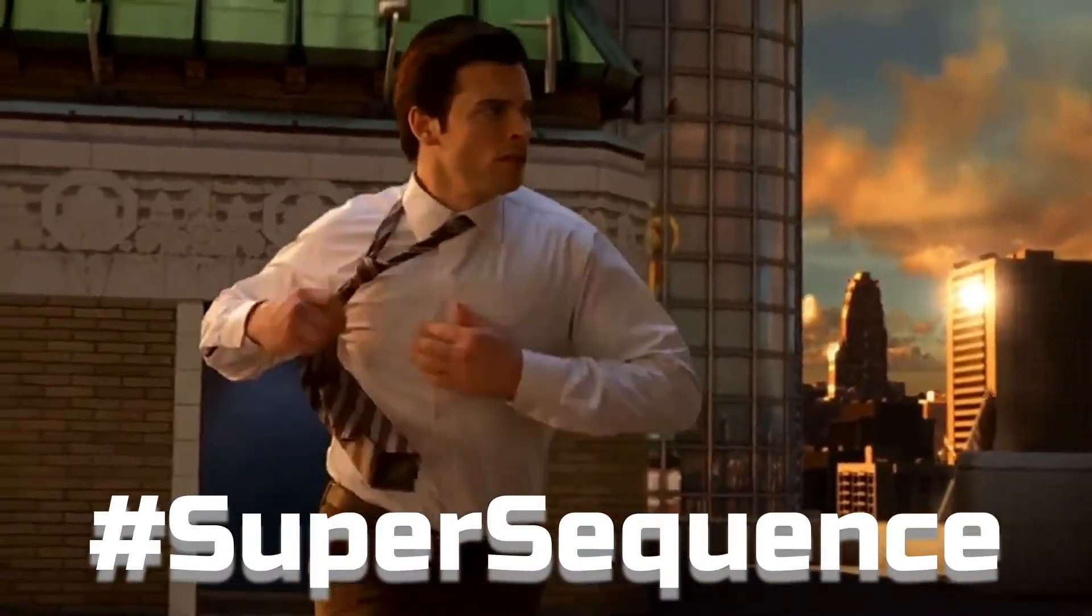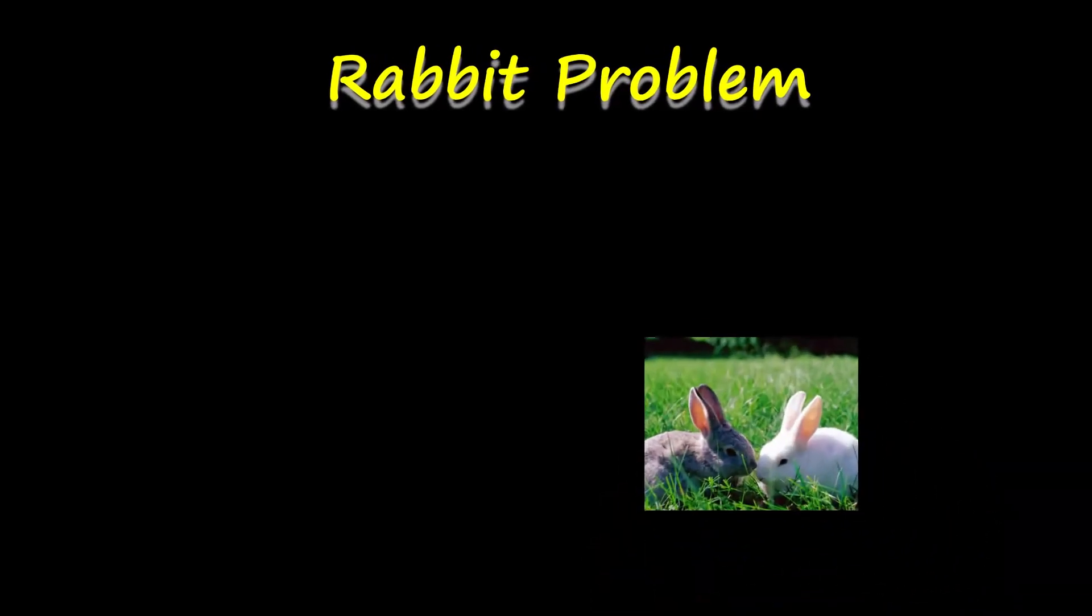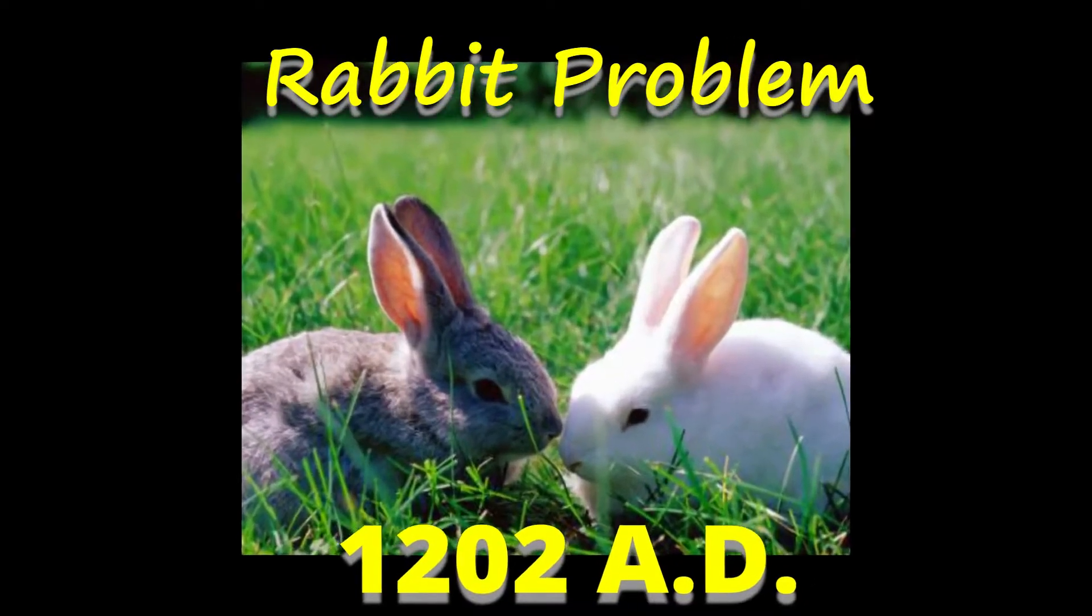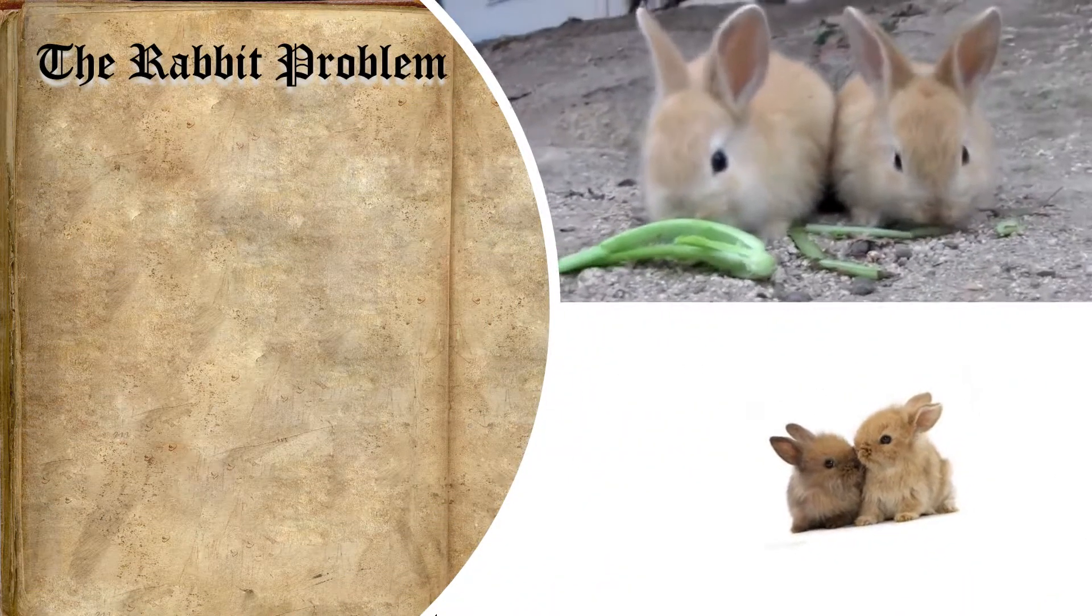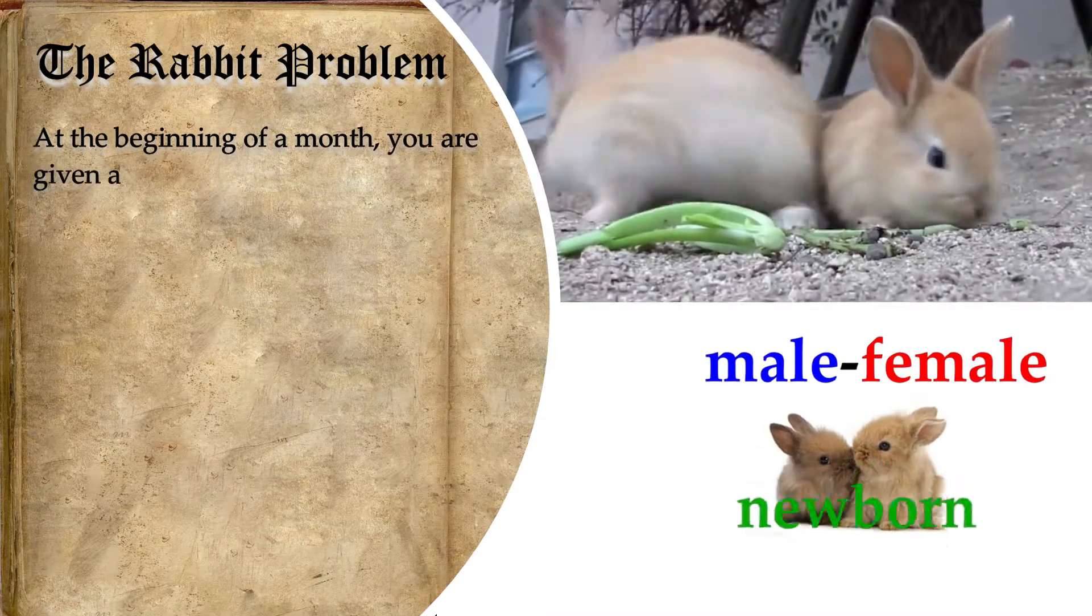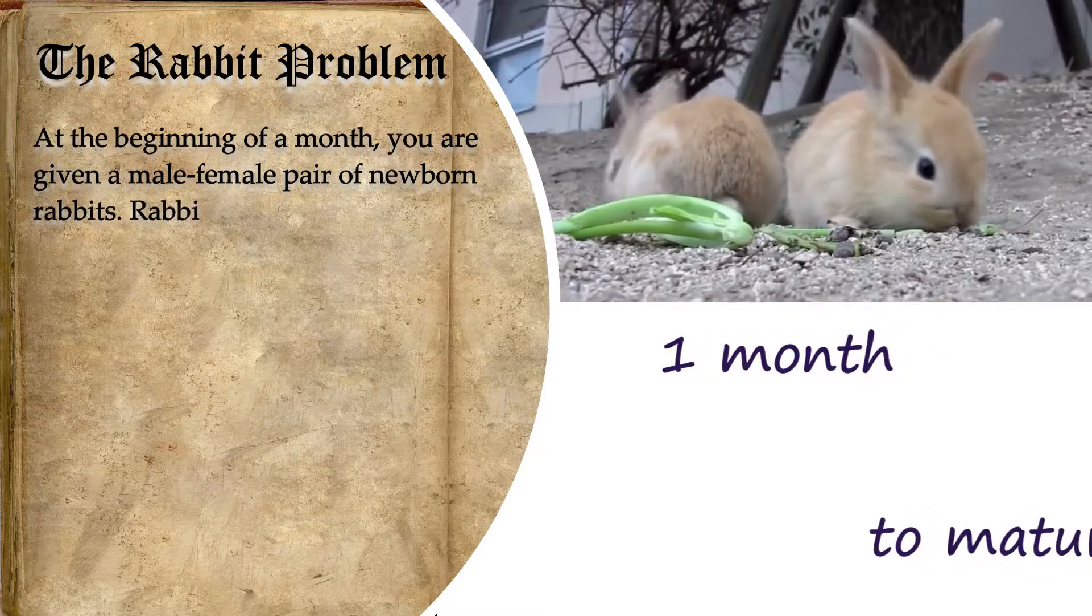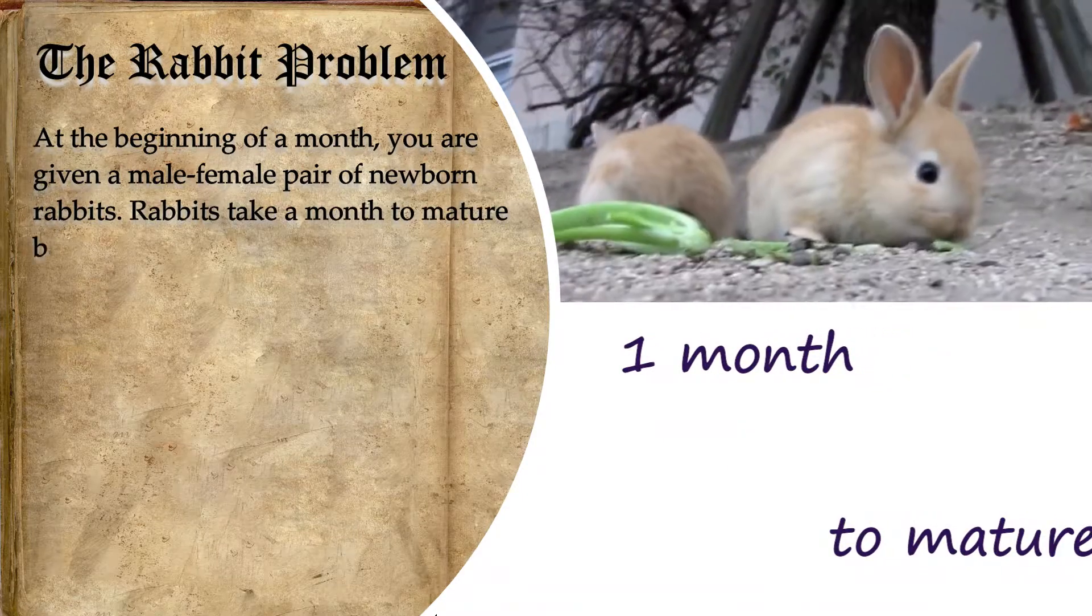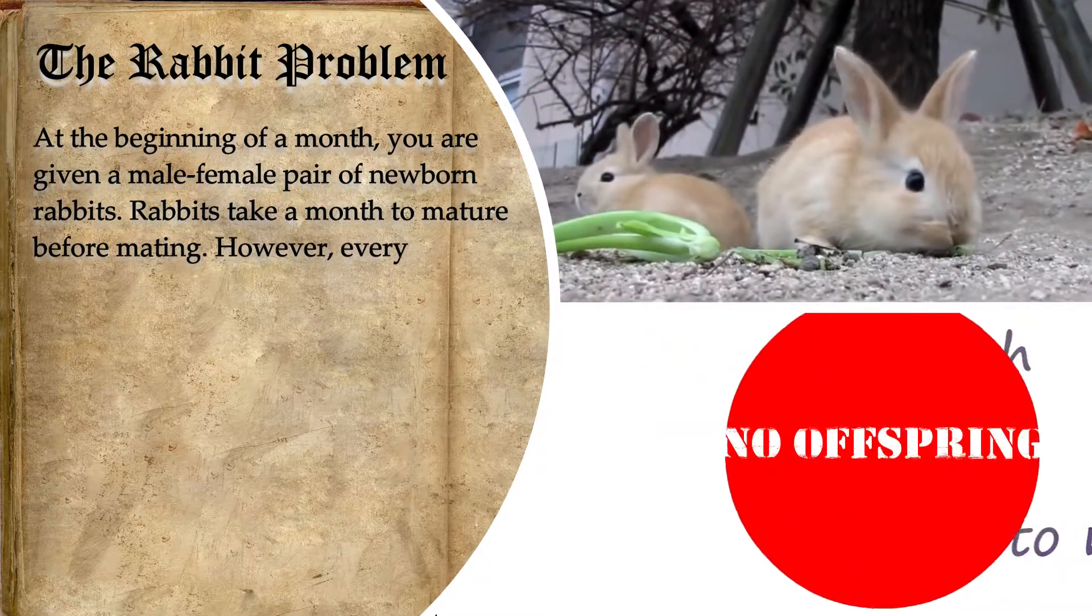So what is this sequence all about? Before we finally reveal the beauty of this sequence, let's have first his famous rabbit puzzle which was published in 1202. The problem goes like this: At the beginning of a month, you are given a male-female pair of newborn rabbits. Rabbits take a month to mature before mating. This means that after a month, the rabbits have produced no offspring.